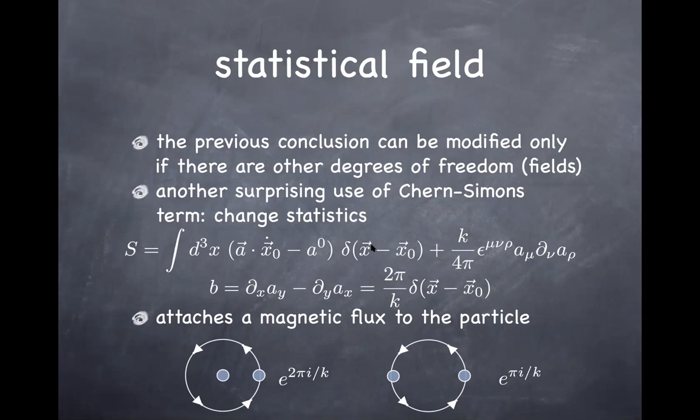What this action tells you is that there is a magnetic field glued to the point particle with a delta function. This Chern-Simons term attaches a magnetic flux to every particle in the system. Once every particle carries a magnetic flux, when one particle circles around another, there is an Aharonov-Bohm phase associated with the magnetic flux. That particle picks up a phase given by the amount of magnetic flux — e^(2πi/k).